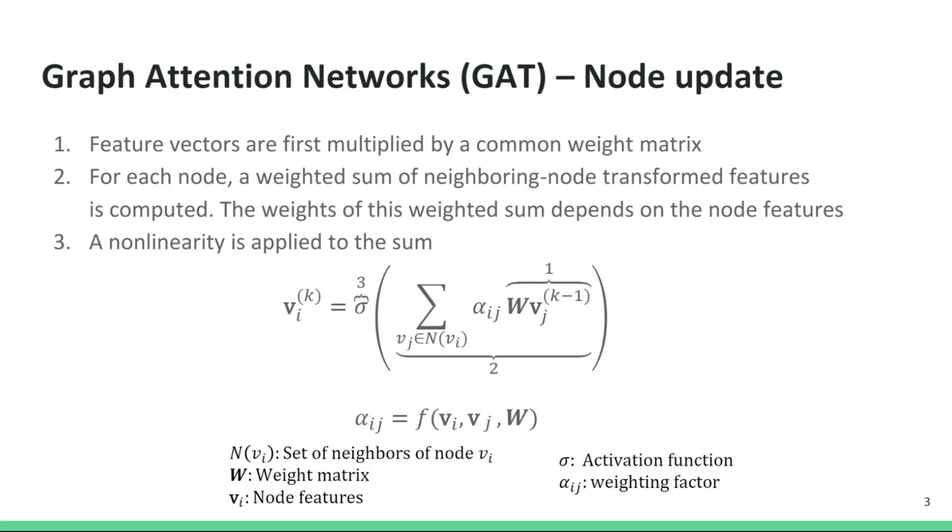Keeping these points in mind, let's take a look at how a graph attention operator works. Firstly, for each node i, the feature vectors of its neighboring nodes, vj, are multiplied by a weight matrix W. We can imagine this as a message that is sent to node i from each of its neighboring nodes.